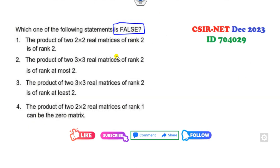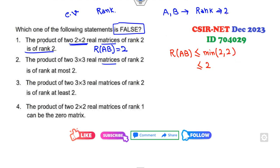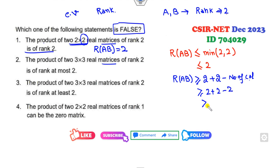Which of the following statements is false? Again, since a matrix is involved, use eigenvalues or rank. Assume A and B are 3×3 matrices each of rank 2. The target is to check whether rank of AB equals 2. We have rank of AB ≤ min(rank A, rank B) = 2. Also, by Sylvester's inequality: rank of AB ≥ rank A + rank B − n = 2 + 2 − 3 = 1. So 1 ≤ rank(AB) ≤ 2. The first option says rank equals 2, which is a correct statement, so it is cancelled since we need the false statement.